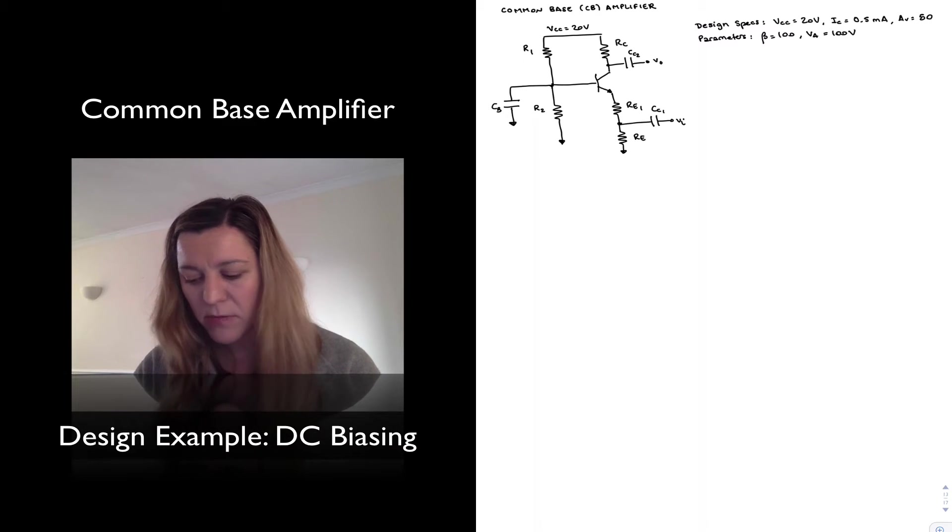Similar design specs: a VCC supply of 20 volts, collector current of 0.5 milliamps and AC gain of 50. And parameters of beta equal to 100 and the early voltage equal to 100 volts.